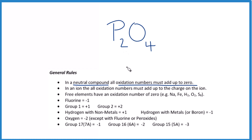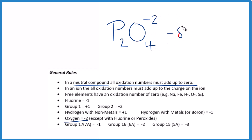If we look at phosphorus, that's not in our general rules, but oxygen is almost always negative two, with a few exceptions. So each oxygen atom will have an oxidation number of negative two. Four times negative two gives us negative eight total.